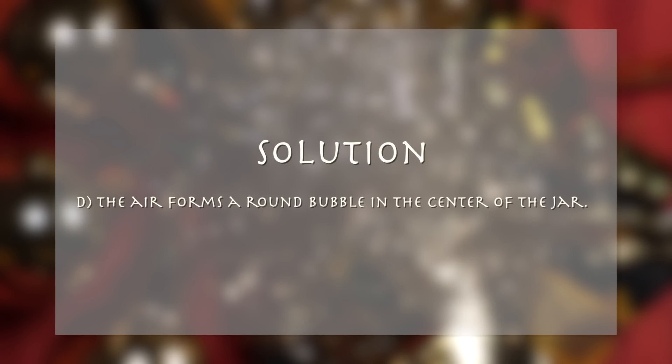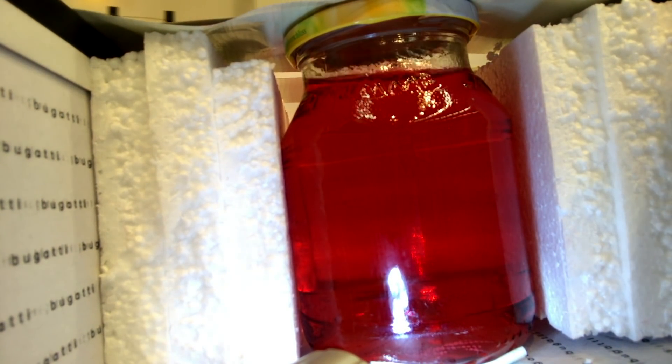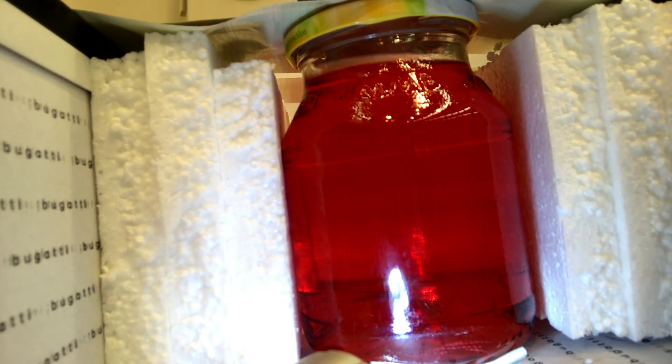Answer D: the air forms a round bubble in the center of the jar since gravity is the dominant force. In freefall, another force becomes apparent — the surface tension — which forces the air bubble into a ball shape, while the water is on the interior walls of the glass around the air bubble.